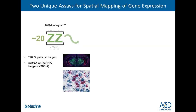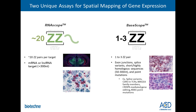The RNAscope technology includes two unique assays to detect RNA at single molecule sensitivity with single-cell resolution. RNAscope targets the majority of RNA species with approximately 20 double Z pairs — designed for messenger RNA and non-coding RNAs greater than 300 nucleotides. BaseScope is a more specialized assay that, by using only one to three double Zs, can detect shorter sequences of 50 to 300 nucleotides. BaseScope can target exon junctions, splice variants, exon skipping, highly homologous sequences, and even point mutations — applicable to splice variants, CDR3 sequences, T-cell receptors, and CRISPR-mediated gene editing.